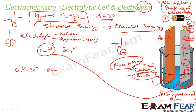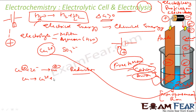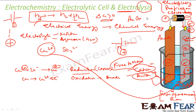Cu²⁺ takes two electrons at the cathode and becomes copper metal — the oxidation number goes from +2 to 0, so reduction happens at the cathode. At the anode there is a deficit of electrons, so pure copper gives up electrons and becomes Cu²⁺ — oxidation happens at the anode. This is summarized by the mnemonic: AN OX RED CAT — anode oxidation, reduction cathode.